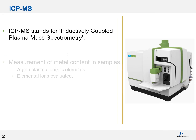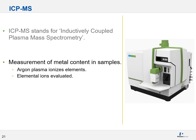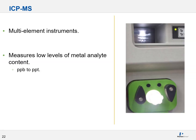This is not to be confused with ICP-MS, which stands for inductively coupled plasma mass spectrometry. An ICP-MS is also used for analyzing metals, but here an argon plasma ionizes your elements and elemental ions are evaluated — as opposed to ICP-OES where we were looking at light emission. ICP-MS systems are multi-element instruments designed for measuring extremely low levels of metal analyte content: parts per billion to parts per trillion, and often even below that depending upon your industry. This power comes at a cost, however, making ICP-MS the most expensive of the three major atomic spectroscopy instruments.